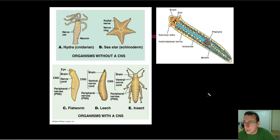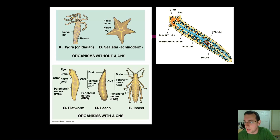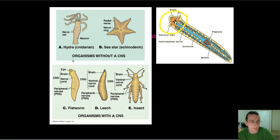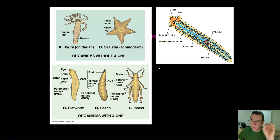Another important thing is the idea of cephalization — the concentration of nerve impulses and systems in one end of the body. For example, this organism will actually have eye spots and a brain in the front of its body. That's called cephalization. Notice that the cnidarians and the echinoderms do not have that — they don't have a region of their body that forms a brain. But other organisms will have a concentration of nerves in a certain area, which we call the brain or cephalization. This gives them an advantage because they can have the majority of their senses in the direction in which they're heading.